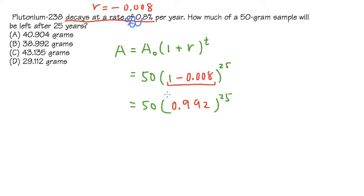And then you can just punch this onto your calculator. And on the calculator, it's going to give you the answer, approximately speaking, 40.904 grams. That's the amount that we are going to get after 25 years.